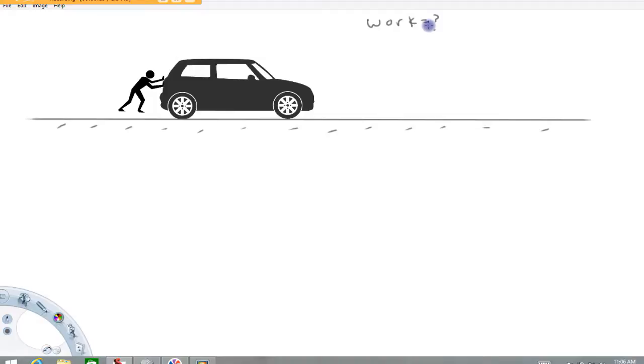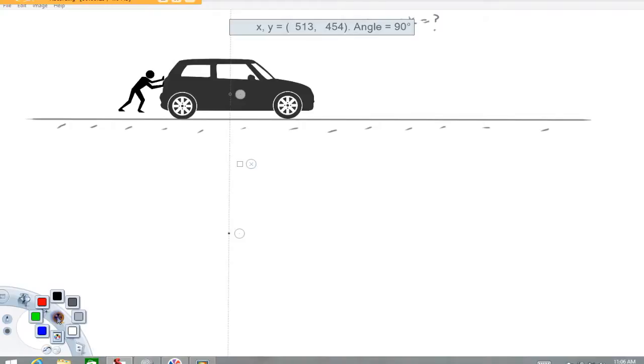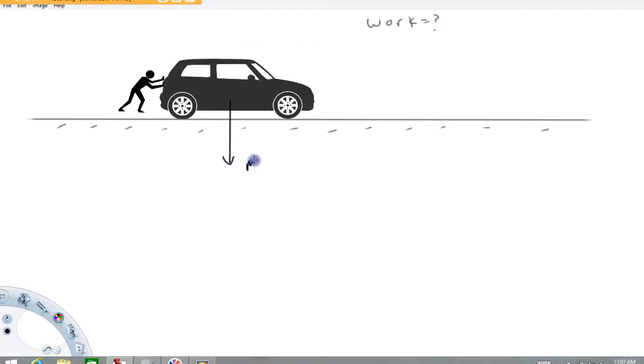Alright, well imagine we got this automobile, maybe it's ran out of gas or something, and the driver's out here pushing it along. If we think about a free body diagram of that car, we've got a gravitational force which is down at the center of mass, and usually when we calculate it that's mg.